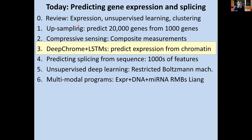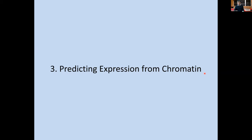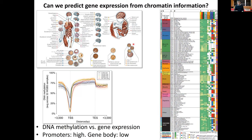We've now covered upsampling 20,000 genes from 1,000, and compressive sensing with composite measurements to infer modules directly from gene combinations. Let's turn to predicting gene expression directly from chromatin — specifically using deep architectures and long short-term memory attention models to predict gene expression from histone modification marks and DNA methylation.